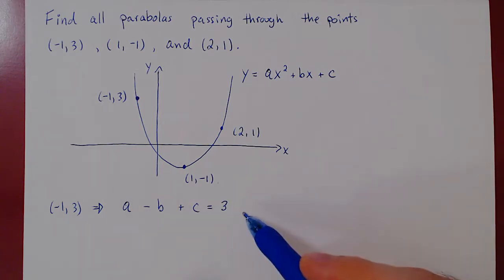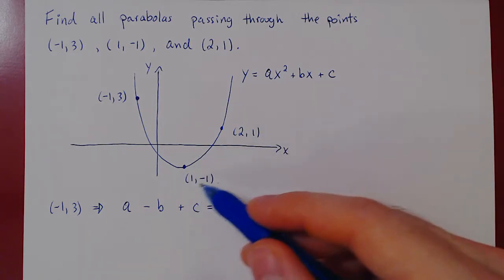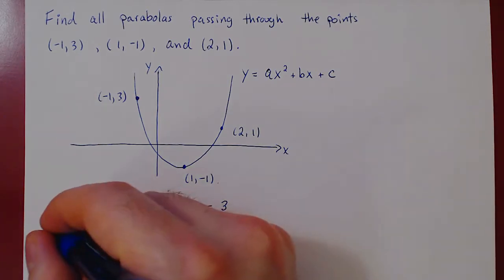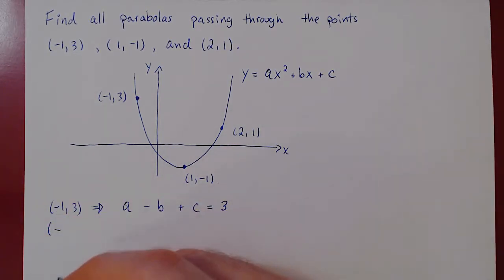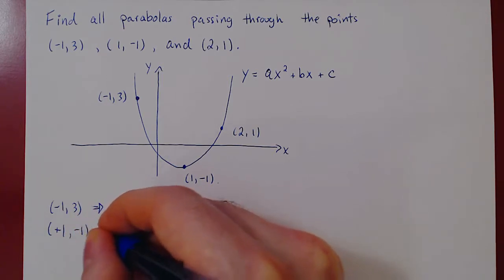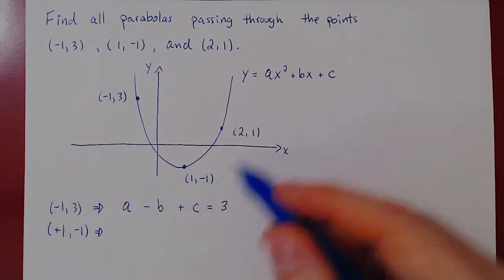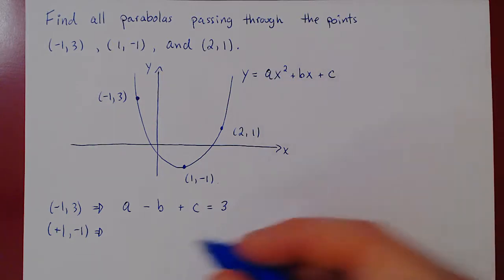But it's not the only one. This point also must satisfy the equation of our parabola, so we can make a similar substitution. So positive one, negative one. So we replace x by positive one, and we'll simply get a plus b plus c equals negative one.